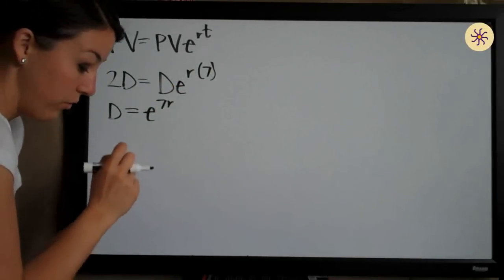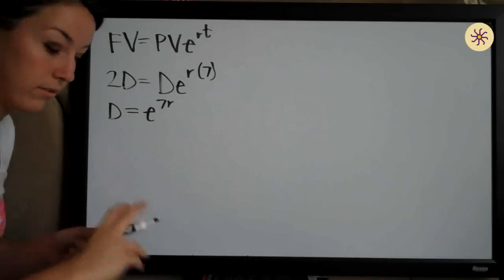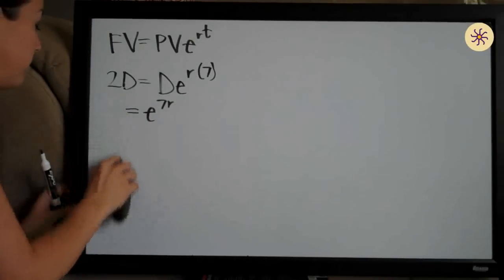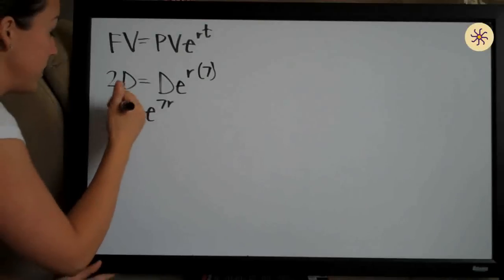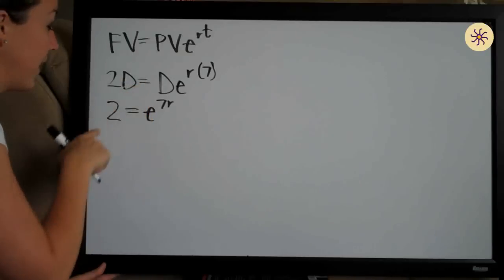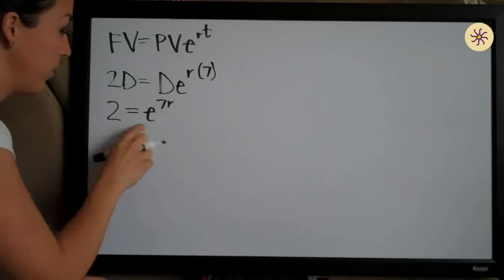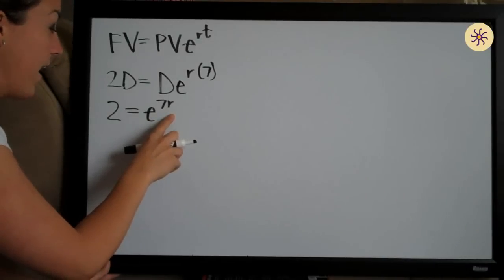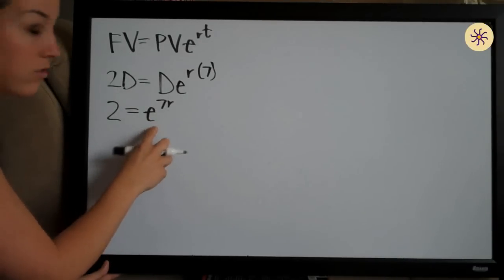Actually, this is not D squared, this is 2D, so we have 2 over here. If we divide both sides by D, the D's will cancel and we'll be left with 2. So we have 2 = E^(7R). To get rid of this E so that we can get the R out of the exponent,